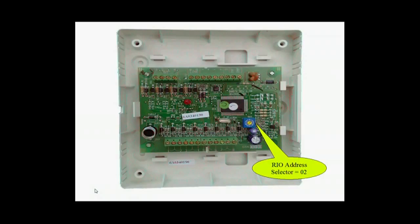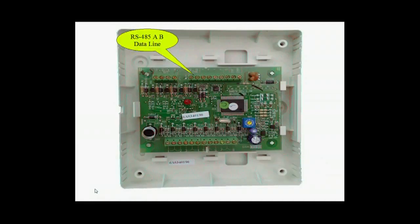The RIO address selector has the arrow pointing to 2, which automatically becomes 02. To the top of the board we have the data line A and B connections for both incoming and outgoing modules.